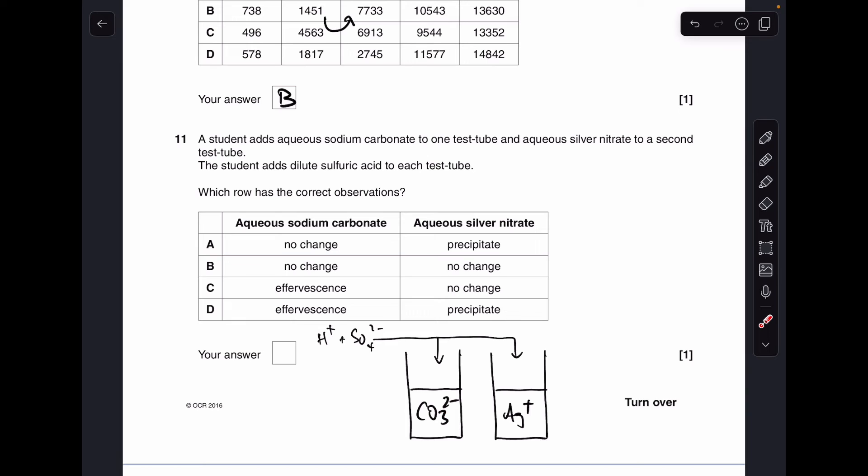Moving on to number 11. We've got these two test tubes. One of them's got sodium carbonate in. We're only interested in the carbonate ion in that one. The other one's got silver nitrate in. And we're only interested in the silver ions in that one. So they're adding sulfuric acid to both test tubes. So they're adding H plus ions and sulfate ions. So what would you expect to see? First test tube, the H plus ions are going to react with those carbonate ions and make CO2. So you're definitely going to see effervescence or fizzing. So that means we can rule out A and B. Second test tube, the sulfate ions will react with the silver ions and form a precipitate of silver sulfate. So D was the answer.